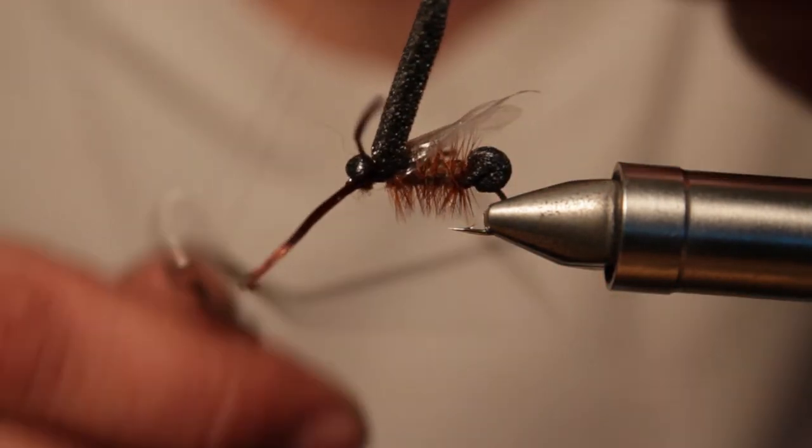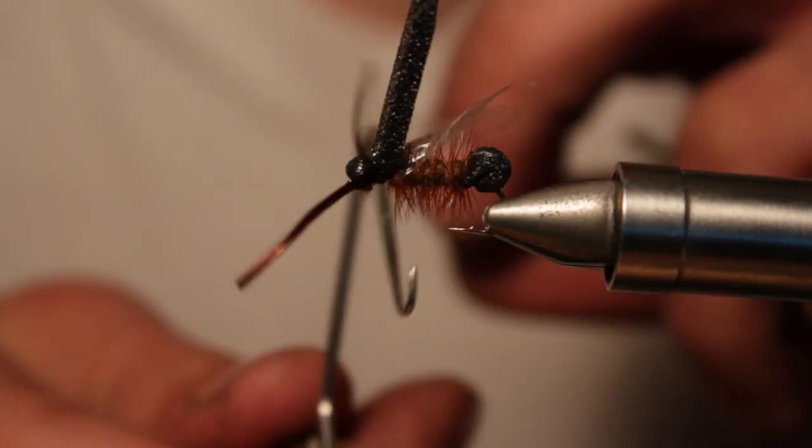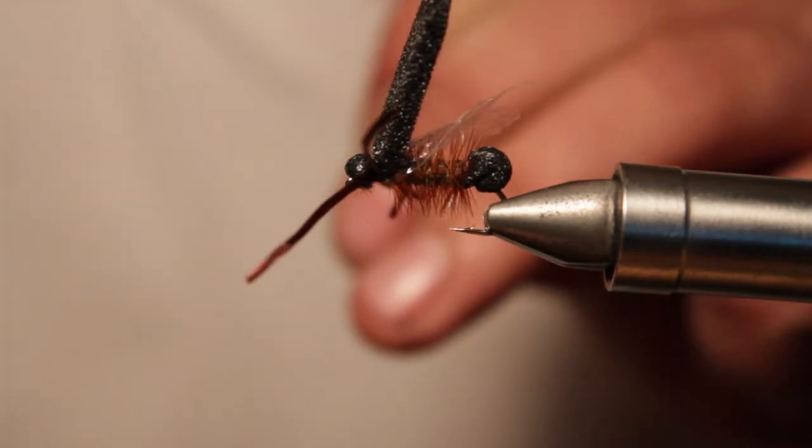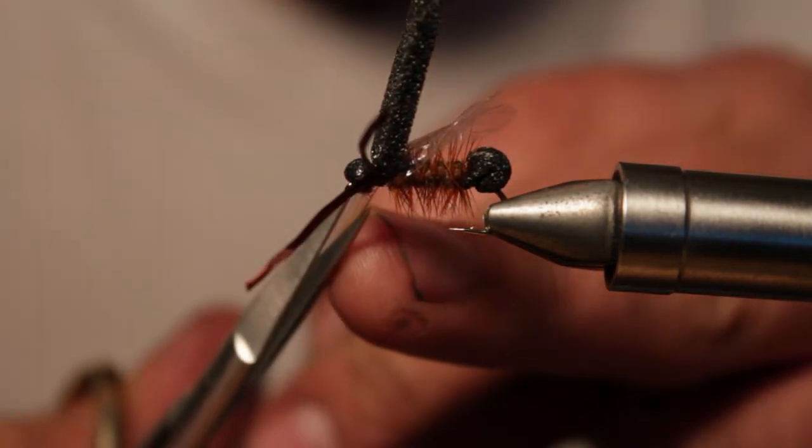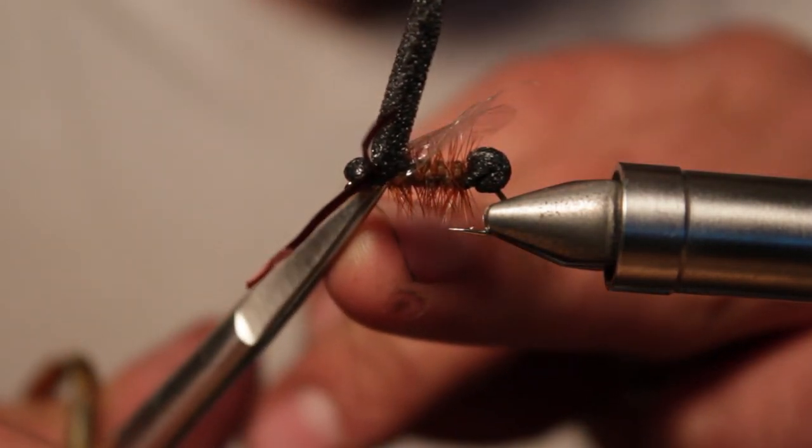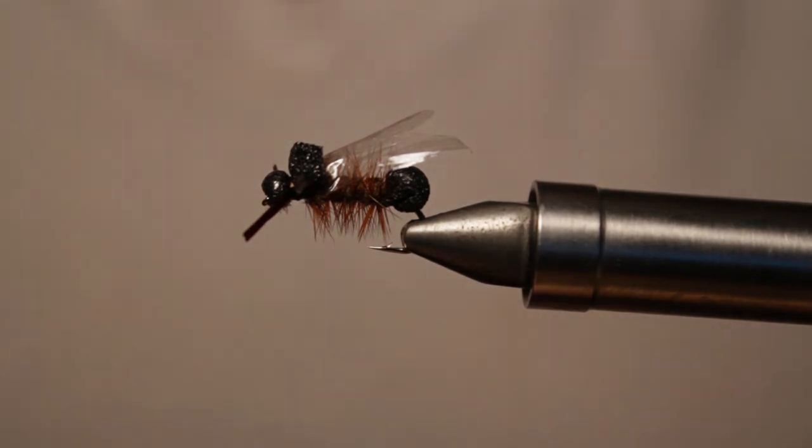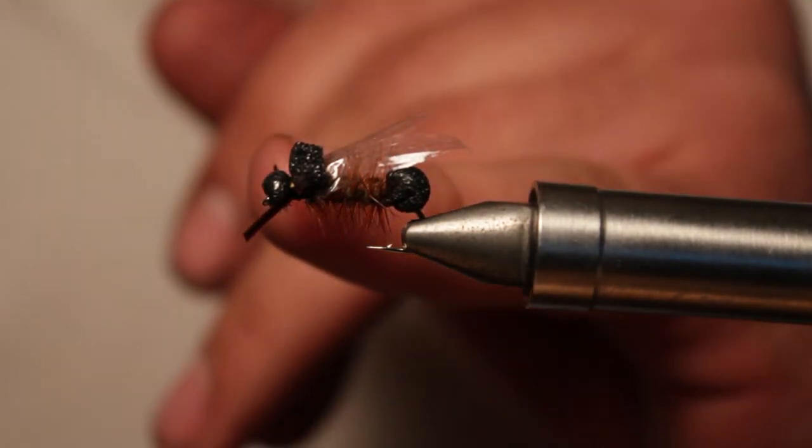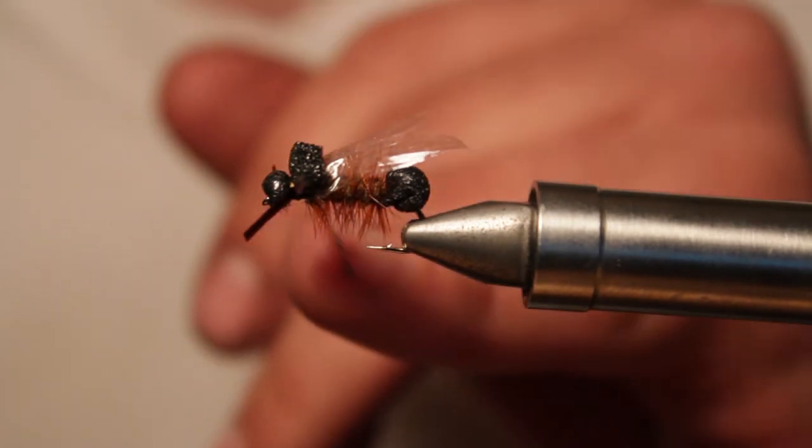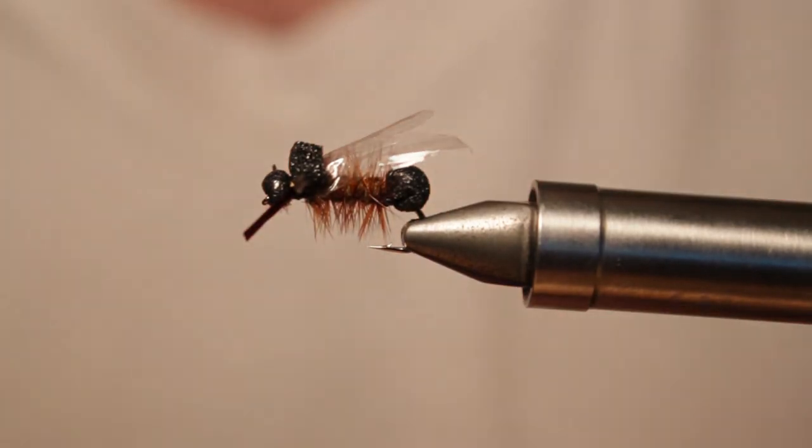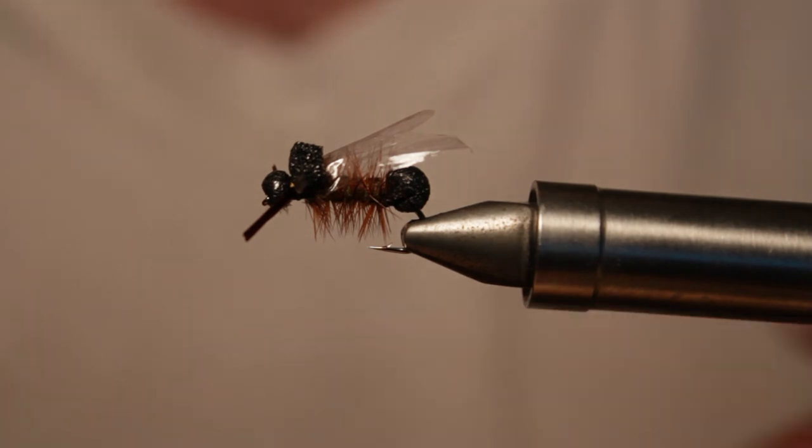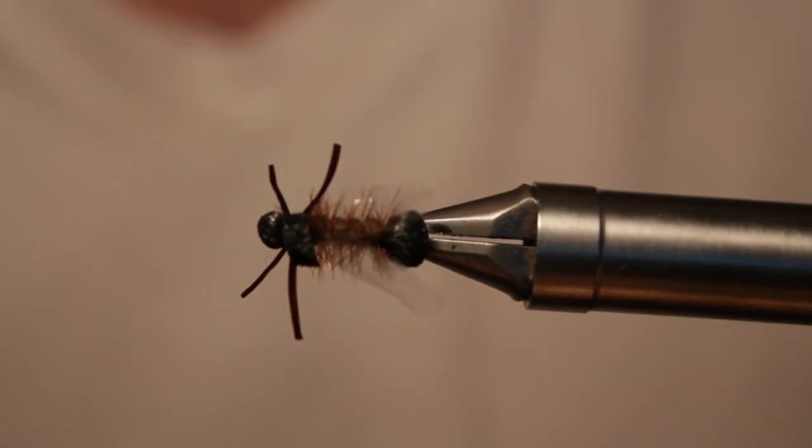Then I'm just going to whip finish this. And then finish it off with whatever you like to finish your flies off with, whether that's head cement or loon UV. And clip off the excess foam.